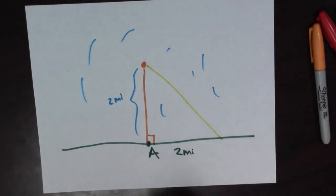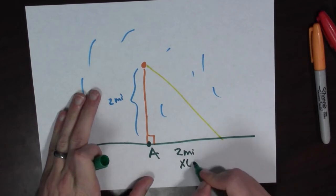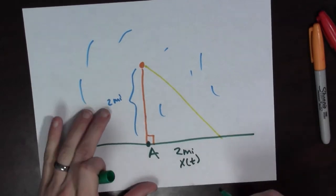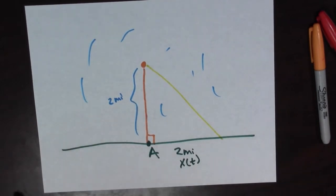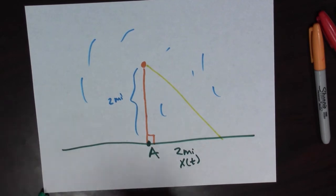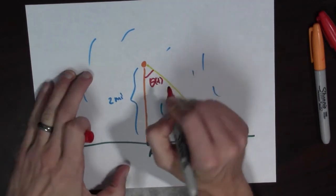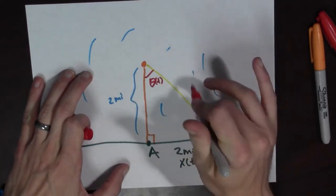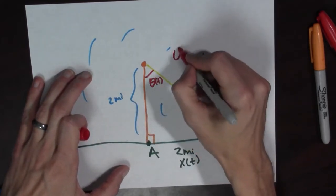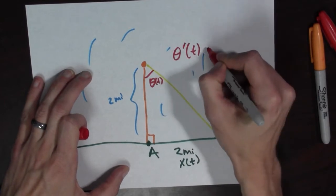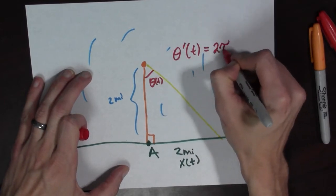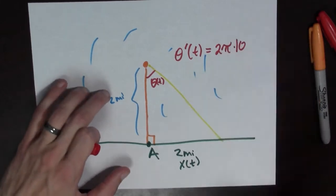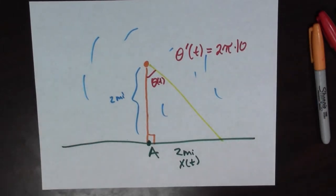And this beam is moving so really we should probably call this something like x(t) and the beacon is rotating and so this should be called θ(t) and we know something. We know it makes ten revolutions per minute. So this tells us that θ'(t) is equal to 2π times 10. That's ten revolutions per minute.